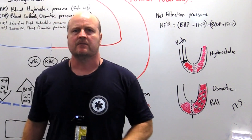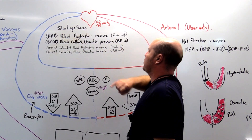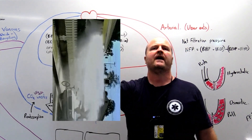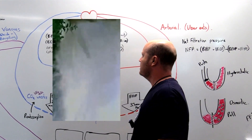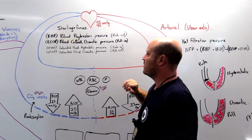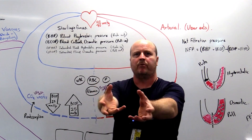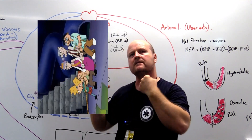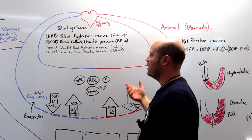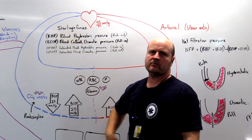With our Starling's forces, we've got four forces. We've got our blood hydrostatic pressure — the blood pushing fluid out of the capillary. We've got our blood colloid osmotic pressure, which is the osmotic pressure pulling fluid into the capillary. And then we also have the same hydrostatic and osmotic pressures in our interstitial fluid.